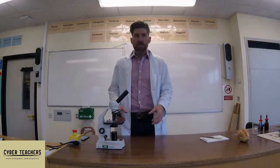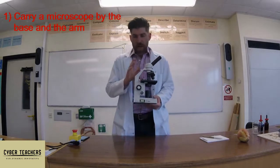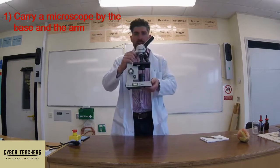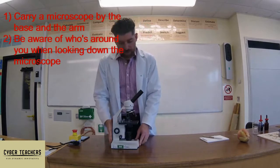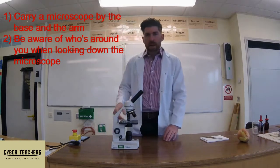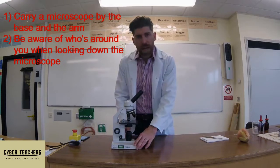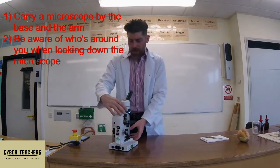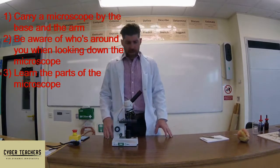Before we start, you need to know a few basic rules about the microscope. Number one: if you're carrying this piece of equipment around, you carry it by the arm and by the base — otherwise you carry it like this so you don't drop it. Number two: when you're looking down a microscope, make sure you're careful about who's around you, because if you get knocked from behind you're going to take your eye out.